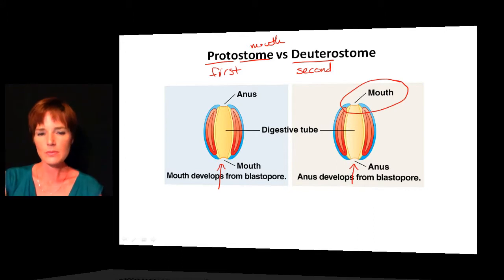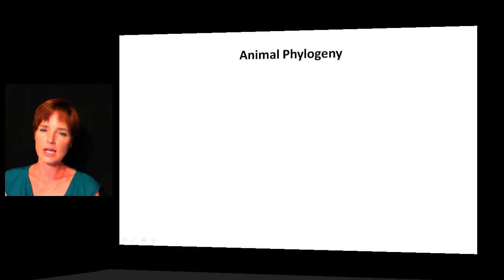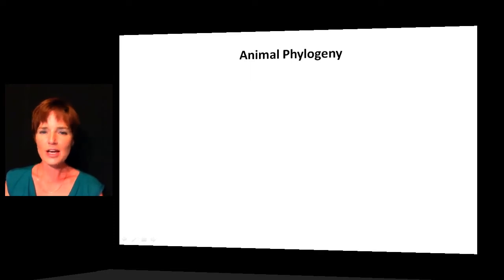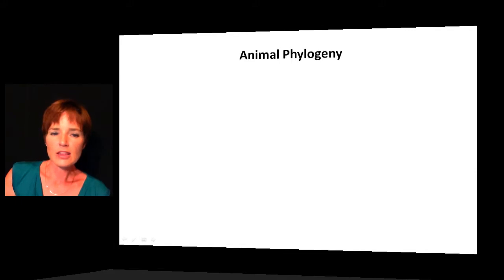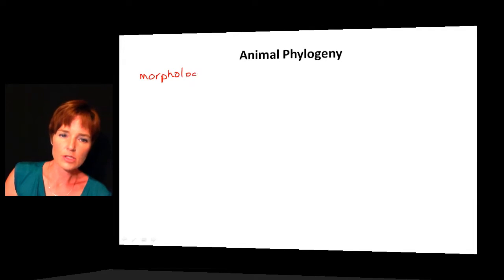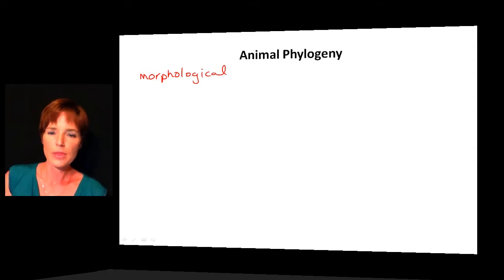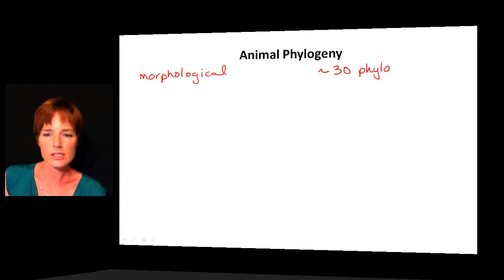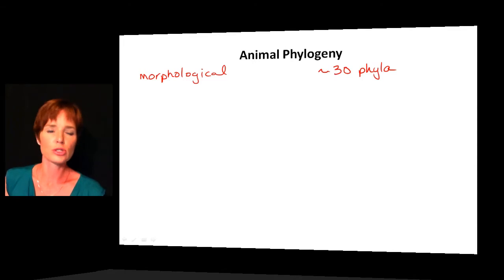Looking at animal phylogeny, just as with earlier groups, animal phylogeny is not written in stone — it changes quite a bit. You can never look at a textbook regarding phylogenetic groupings and consider it to be absolute fact. It used to be that all animal groups were classified based on morphological data, but now we have more molecular data available, which shuffles things around quite a bit. To date there are about 30 animal phyla recognized, give or take a few.